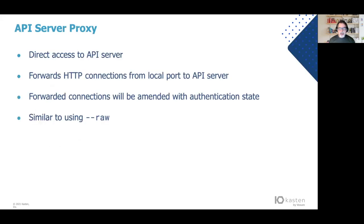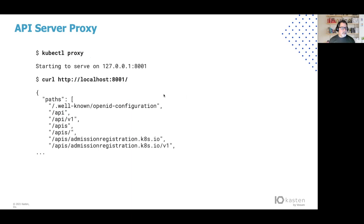The first topic I'm going to talk about is the API server proxy. The API server proxy allows direct access to the API server via HTTP connection from a local port. This is very useful for debugging or executing commands that are in alpha or beta and not fully supported in kubectl. Forward connections are automatically amended with authentication state, so there's no need to provide traditional authentication when forwarding connections. Here's how you start up an API server proxy — it's very simple: kubectl proxy. This will start up a proxy that listens on port 8001 on localhost.